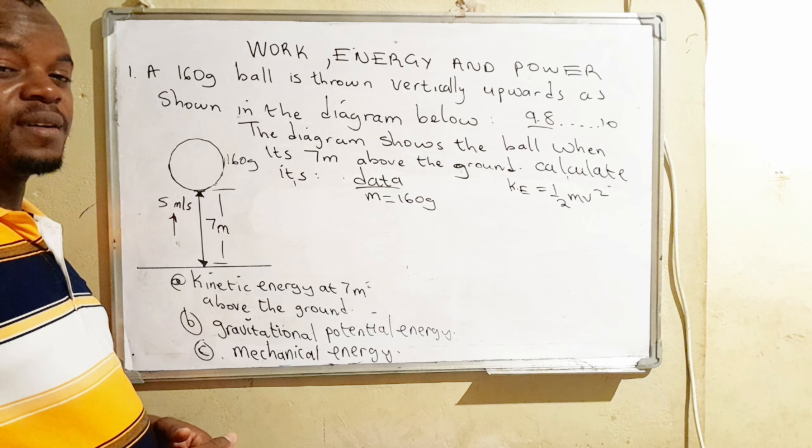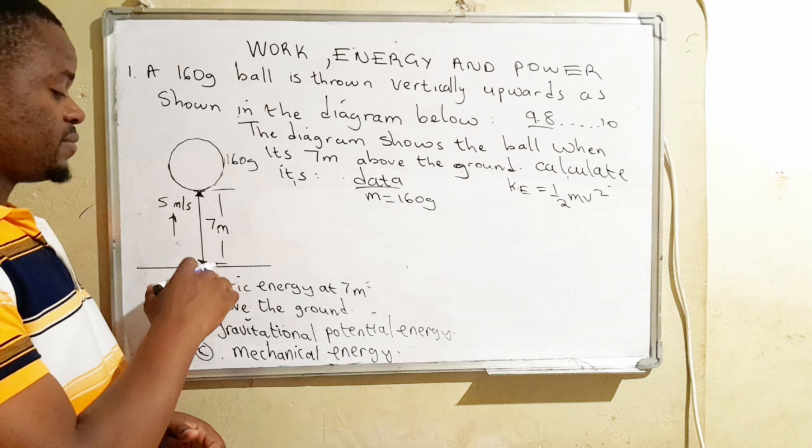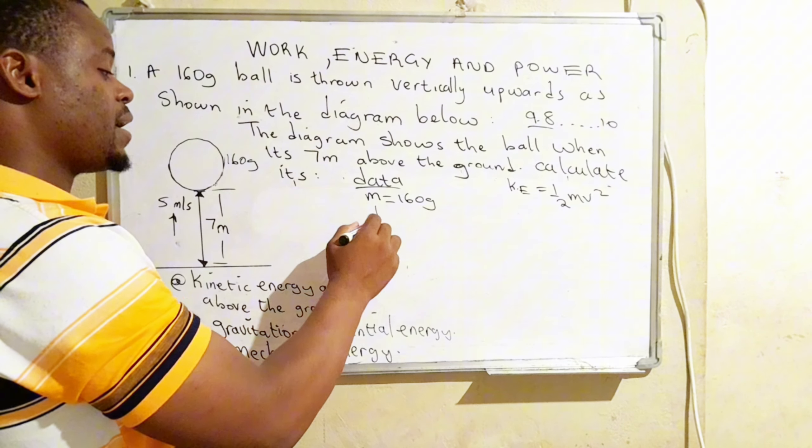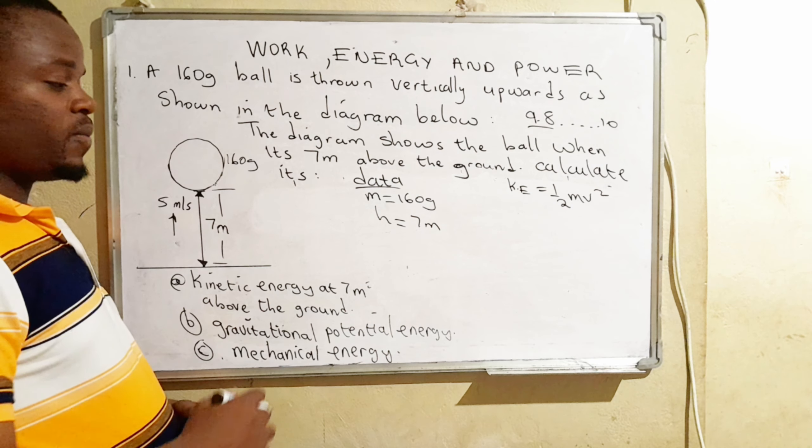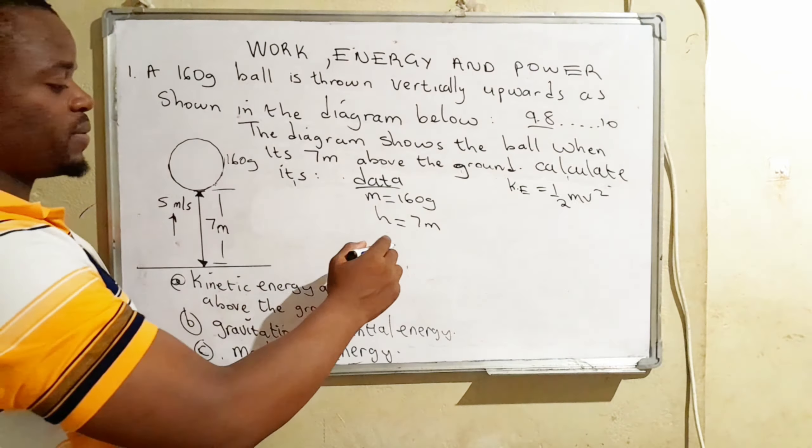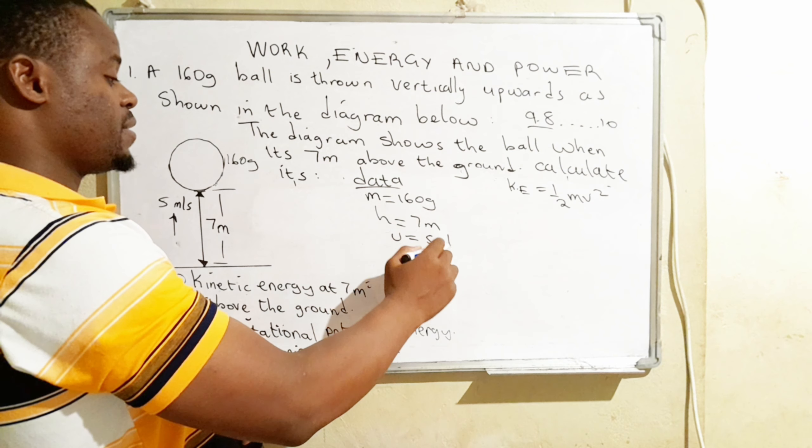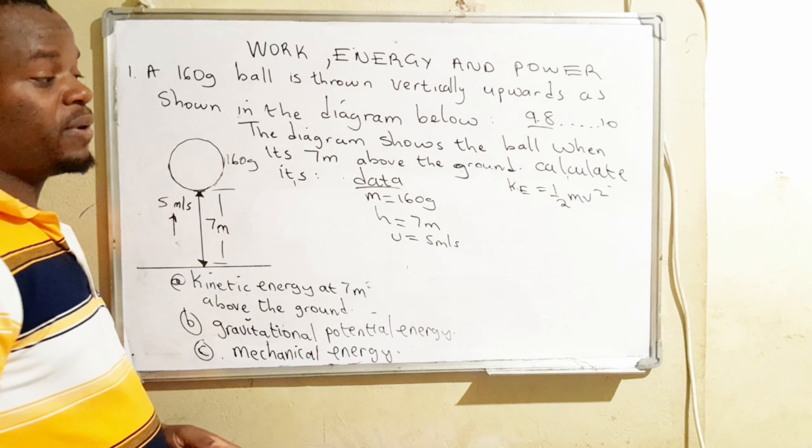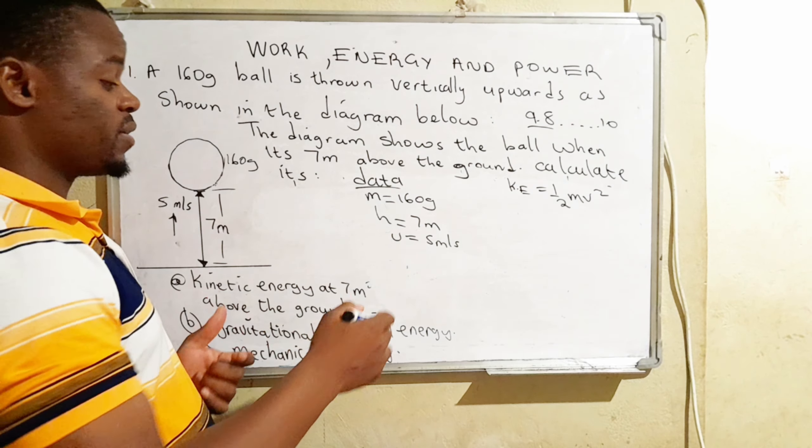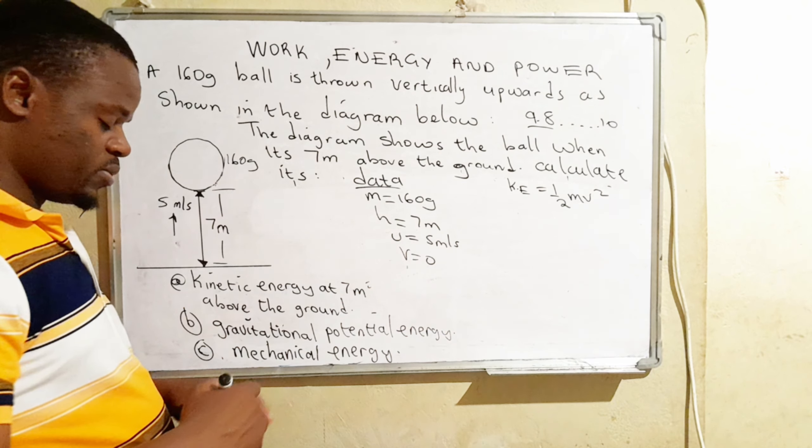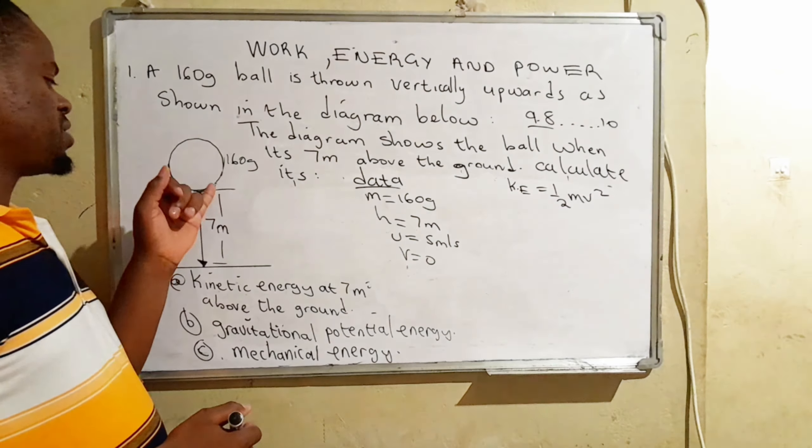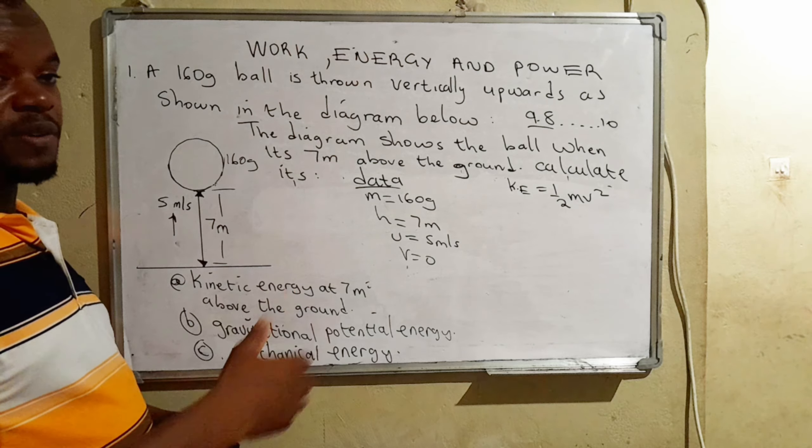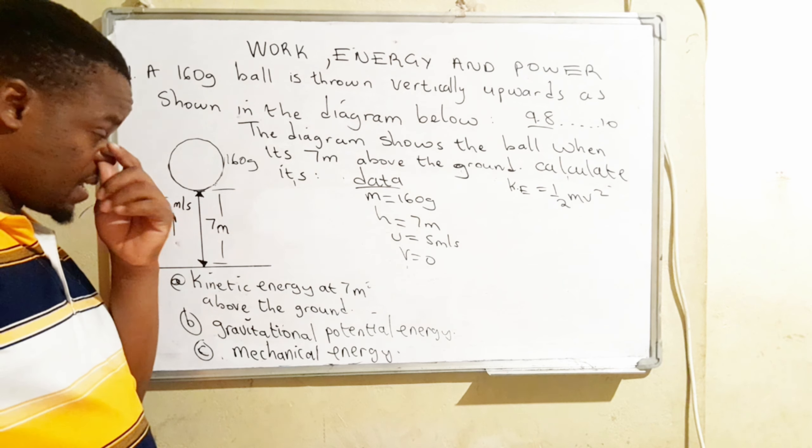So we are applying the concept of freefall. So the moment it reached this point, its final velocity was actually zero. So if we were to collect data, we would have mass given as 160 grams. Then we've been given the height through which the ball went, and that's the maximum height. That is height given as seven meters. Then what else? The initial speed at which it was moving. Initial velocity is five meters a second. Now, if we are now asked to resolve this, we will now begin to think of the final velocity. Final velocity is equal to zero, because if it reached this point, it goes up, and then it reaches that point, then it stops moving.